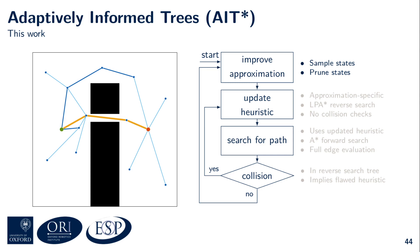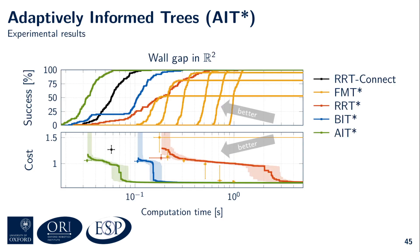Let's now take a look at some statistical results. These plots show the performances of RRT-Connect in black, FMT* in yellow, RRT* in red, BIT* in blue, and AIT* in green on the wall gap problem we've seen on the previous slides. Each planner was run 100 times for 5 seconds. The top plot shows the percentage of successful runs over time for each planner. The bottom plot shows the median solution costs with 99% confidence intervals. The lines show the median costs over time, and the dots show the median costs and times of the initial solutions.